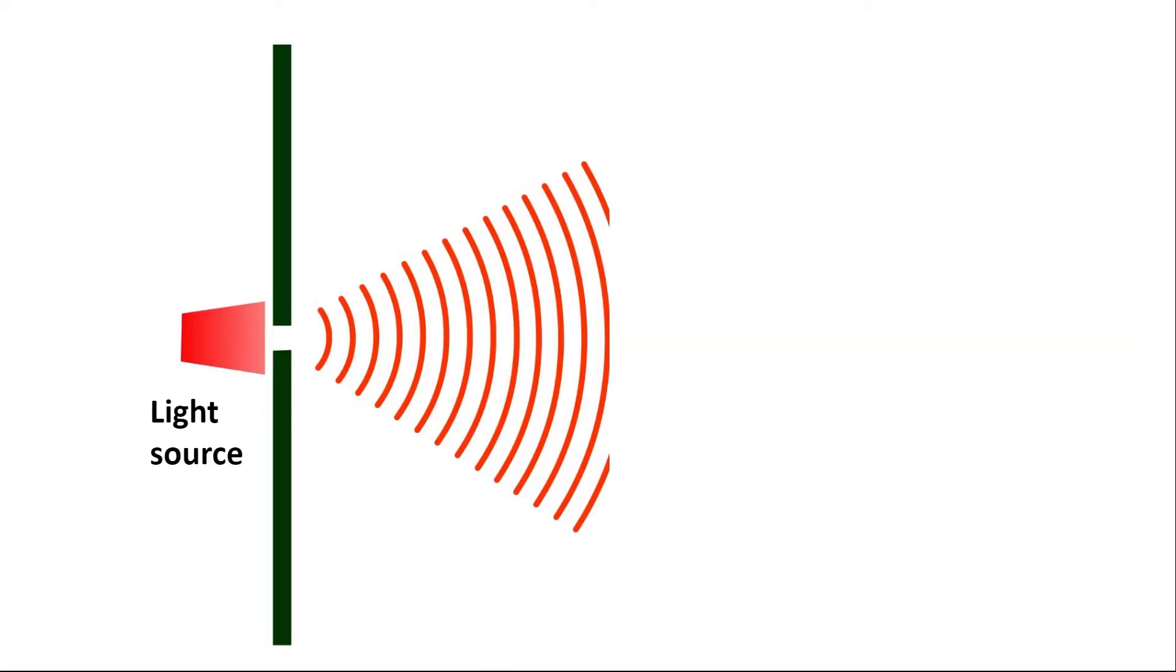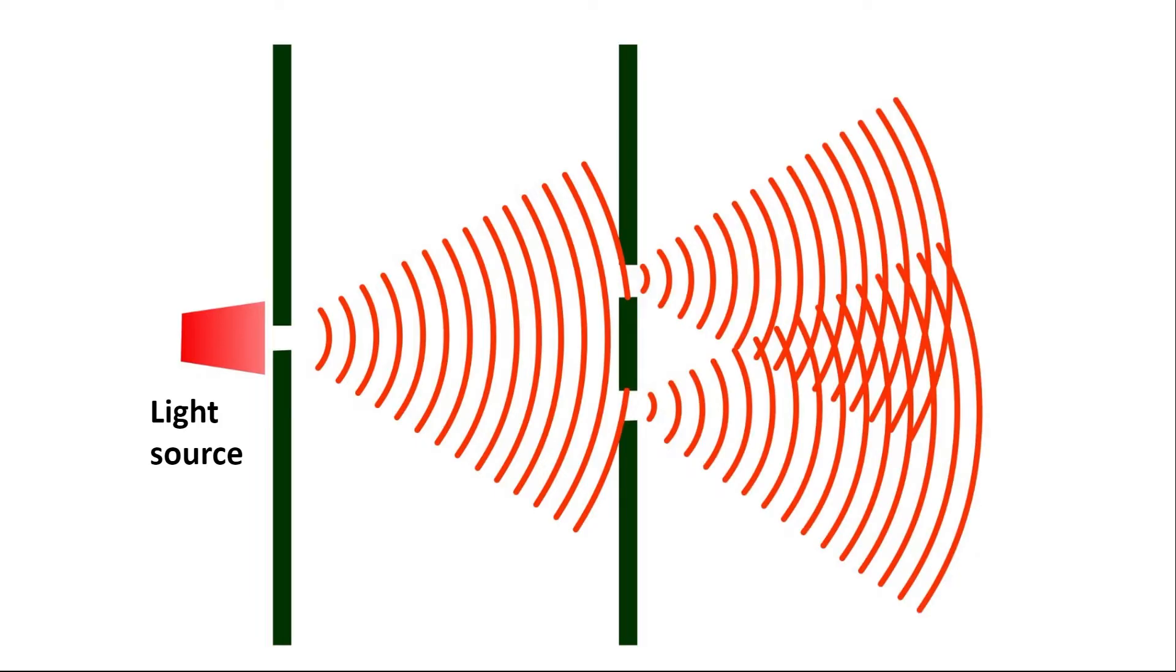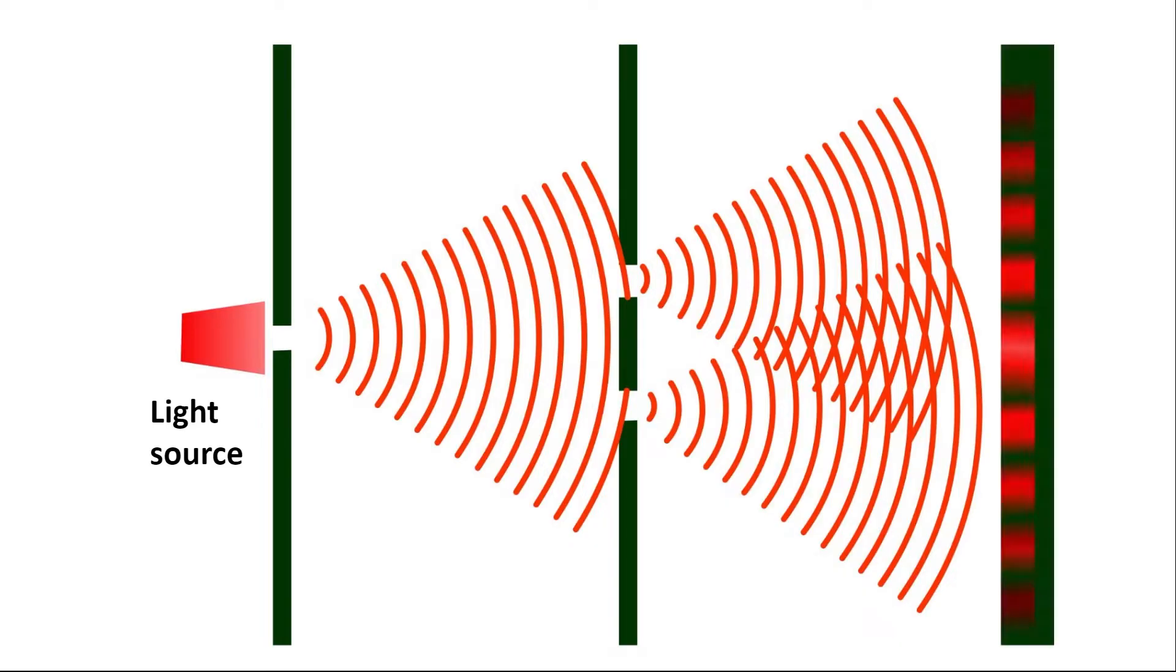Now, the classic way to show that light is a wave is to do the two-slit experiment. Here we have a light source, so imagine a laser shining light forward and hitting two slits. These two slits cause two separate wave fronts to come out. We see those two separate wave fronts overlapping. And when they overlap, they interfere, much like two water ripples overlapping.